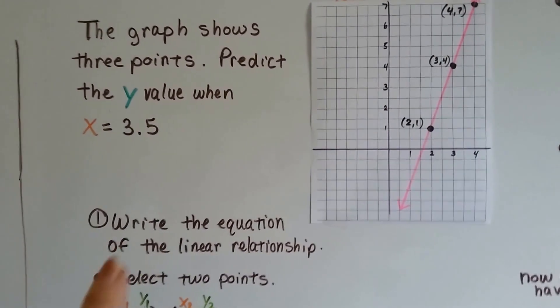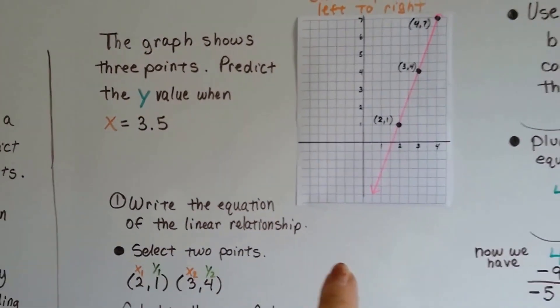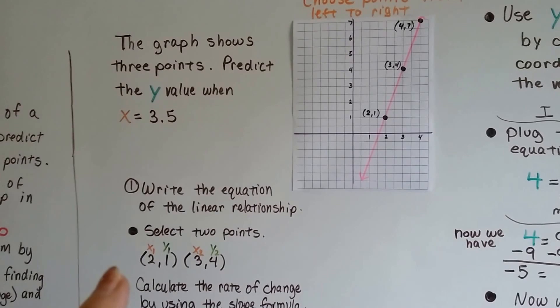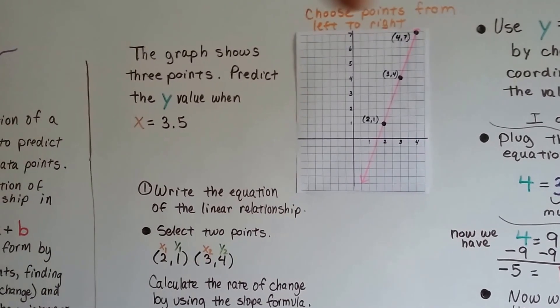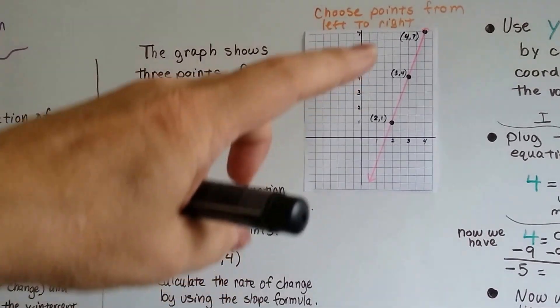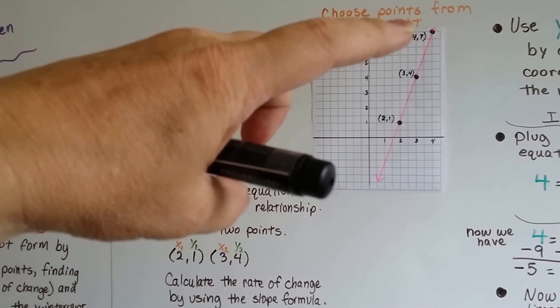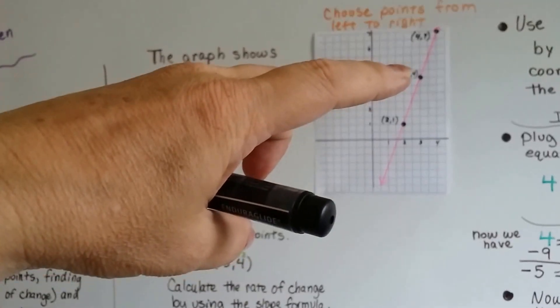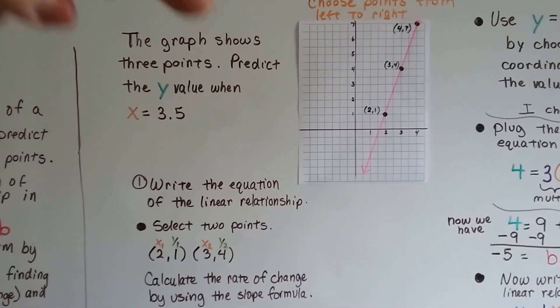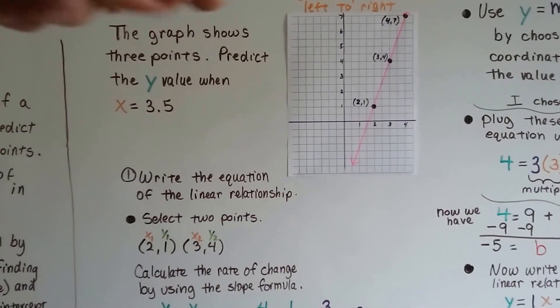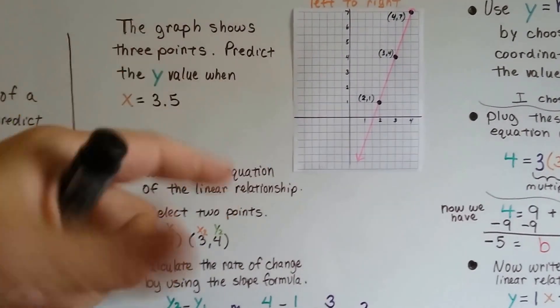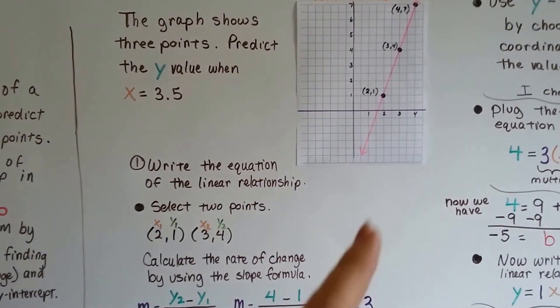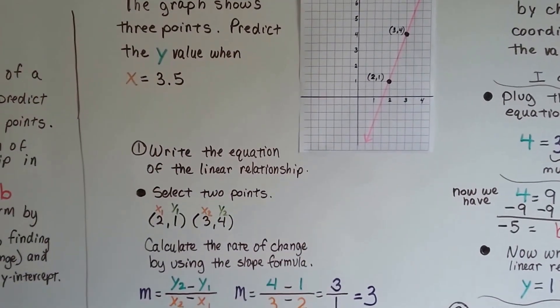We need to write the equation of this linear relationship by first selecting two points. And if you remember from the previous video, we always choose left to right when we choose our points. So we can't choose this as x1, y1, and this as x2, y2. That's going the wrong direction. We need to go from left to right.